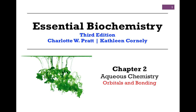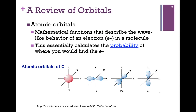First, however, let's do a brief review of orbitals and bonding. Recall that an atomic orbital is just a representation of where we're likely to find that electron in an atom. It's a mathematical function that describes its wave-like behavior and where we're likely to find it. In our illustration here, we have the atomic orbitals of carbon. Notice there's 1s and 3p orbitals.